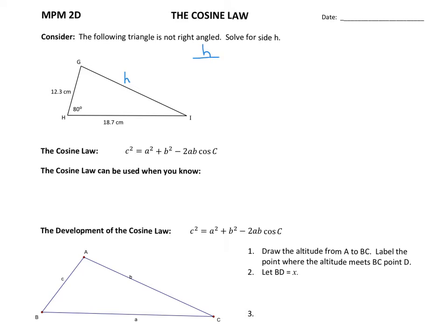H over the sine of angle H, which is 80 degrees, would be equivalent to side G, which is 18.7, over the sine of angle G — which we don't know, nor can we find that angle, because we only have the 180-degree angle sum.